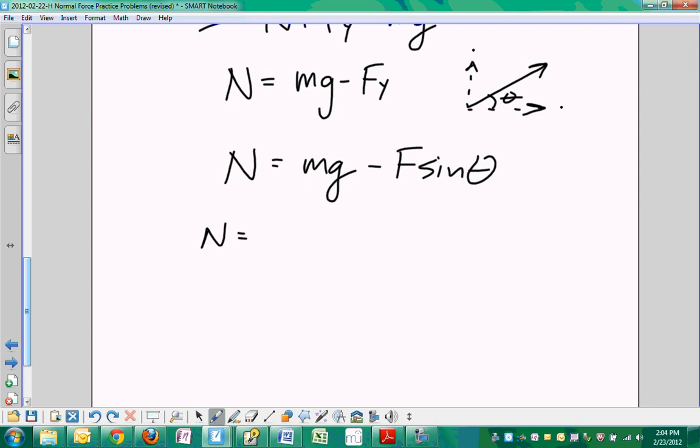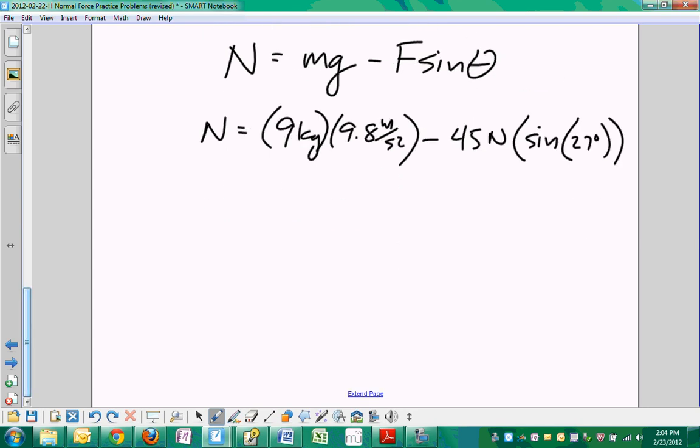All right. So now we just plug in numbers. N is equal to MG, still 9 kilograms, times 9.8 meters per second squared, minus the magnitude of force F was 45 newtons, times the sine of 27 degrees. And then we just get somebody in the calculator brigade to plug all that in. And what do we get? 67.8 newtons.